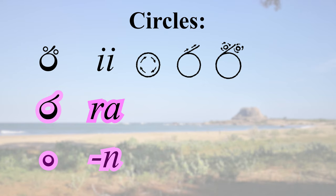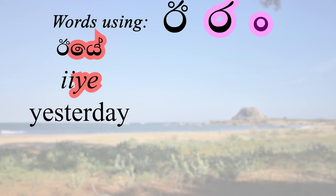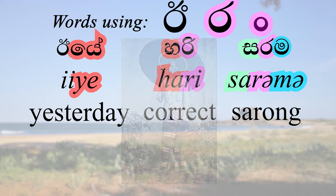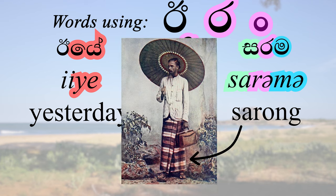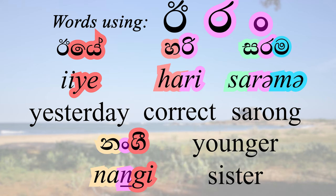We've already seen a long E vowel — it's a very weird shape. RE is drawn exactly like E but without the two dots, resembling an eye with a single eyelash. The little circle is the N sound at the end of 'sing' — not 'sin', but 'sing' at the back of the throat. 'Yesterday' is 'Iye', with both long vowels. 'Hari' is a very common expression meaning good. 'Sarama' is a traditional attire for men — known in English as a sarong, worn from Sri Lanka all the way to Indonesia. 'Nangi' means younger sister, an endearing way to address younger girls.